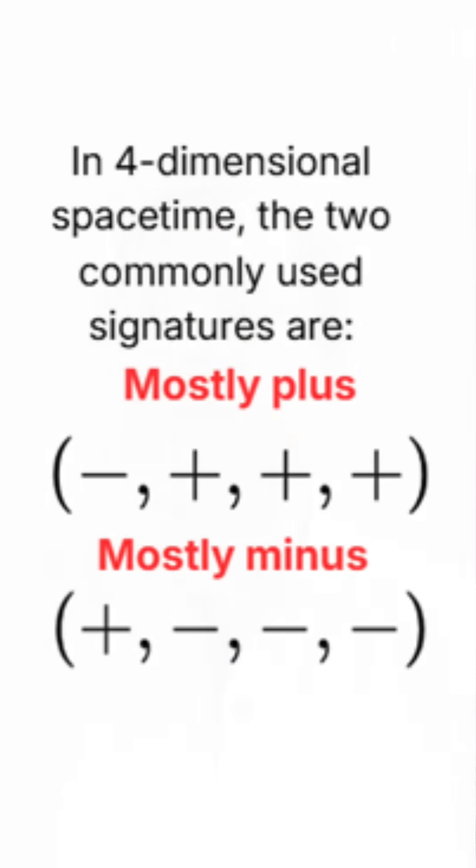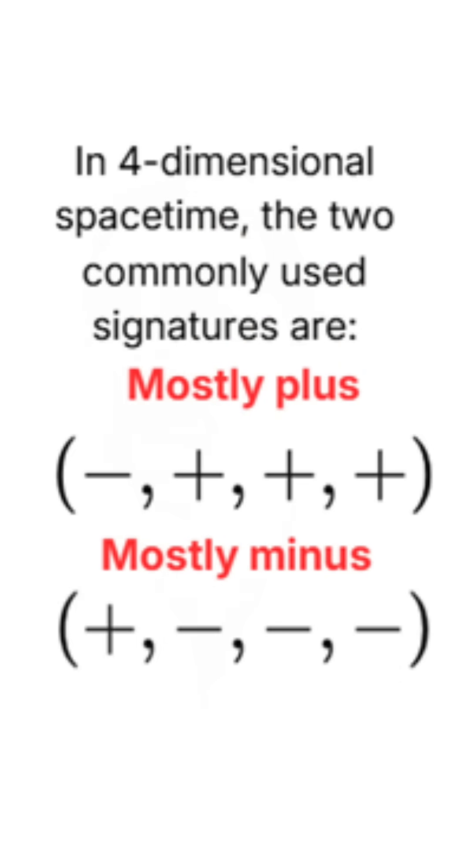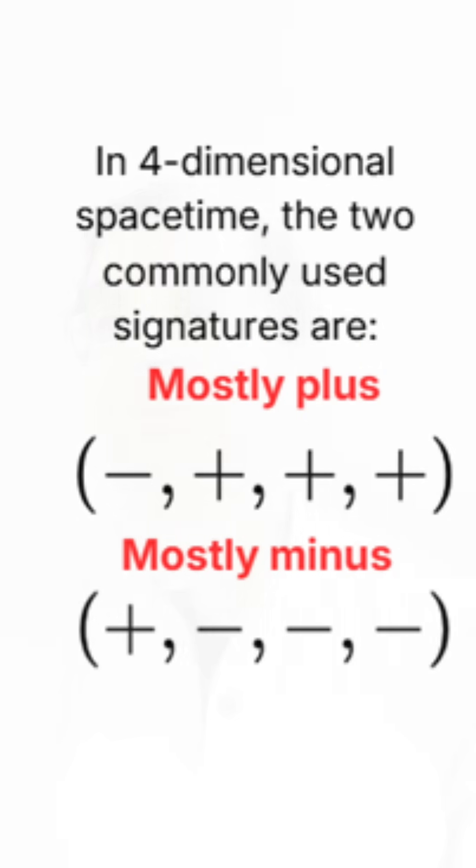The metric tensor also has a signature in spacetime. In relativity, the metric has a signature of minus plus plus plus, which distinguishes time from space.